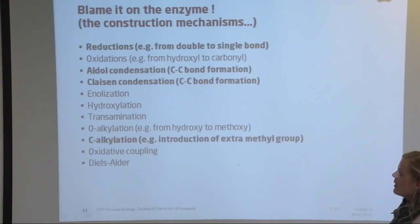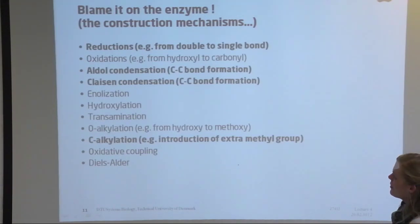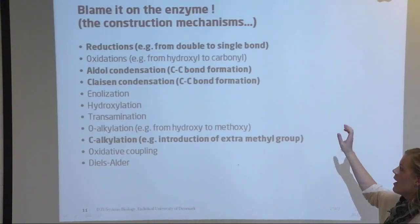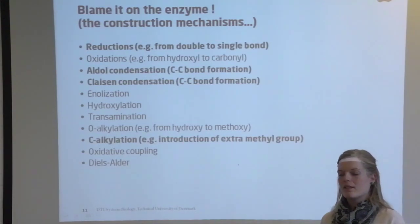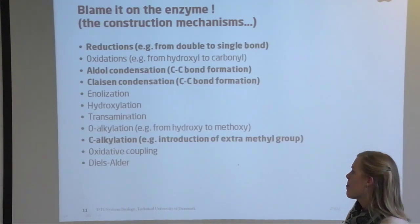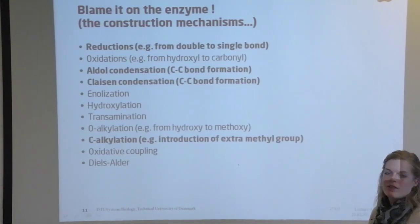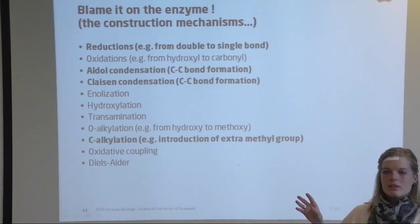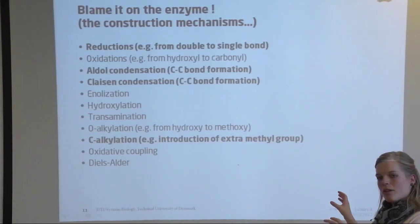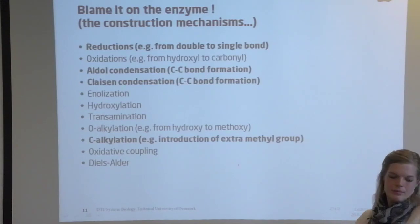We'll focus on five different reaction types today: reductions and oxidations; aldol and Claisen condensations, which form carbon-carbon bonds; and C-alkylations, for example introducing a new methyl group into a compound. We'll use organic chemistry words like reductions, oxidations, condensations, and alkylations to describe these enzymatic reactions — but where the protons, bases, and catalysts come from, they're all from the enzyme. All these functions are encoded into the different modules of the enzyme.